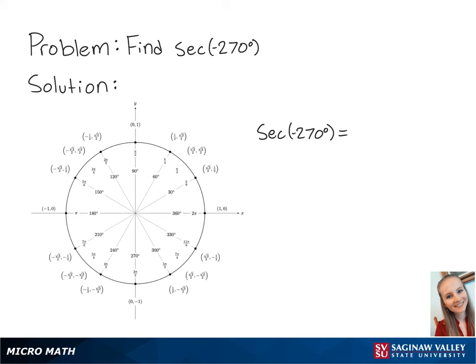For this problem, we're going to find secant of negative 270 degrees. Secant of negative 270 degrees is equal to 1 over cosine of negative 270 degrees. Looking at the unit circle, if we want to find negative 270 degrees, we're first going to start at 0 and rotate backward 270 degrees.